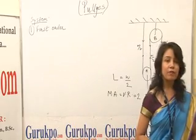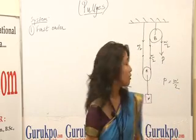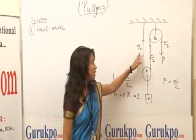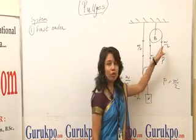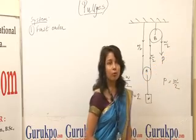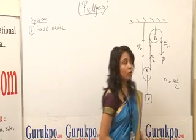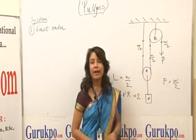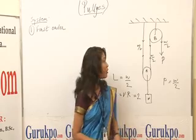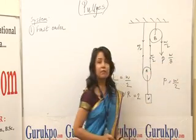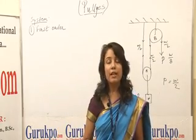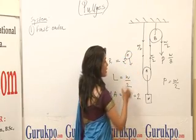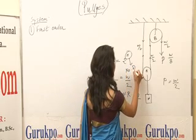Thus, the first order system says that if the system of the pulley consists of two pulleys, then the tension in the rope is divided equally, that is divided by 2, and the effort applied onto the rope will be equalized to the tension on the rope. Also, if there are more pulleys attached, the tension is divided simultaneously. If there are three pulleys, the tension will be divided as W by 8, and if there are 4, the tension is divided similarly. Thus, the velocity ratio or the mechanical advantage can be denoted as 2 to the power of n, where n denotes the number of movable pulleys attached to it.